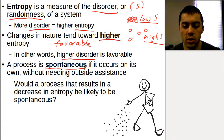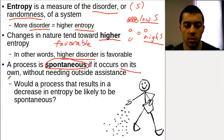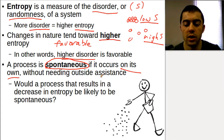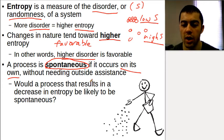An important vocabulary term here is the concept of spontaneity. A process is spontaneous if it occurs on its own — on its own without needing outside assistance. If we need to put energy in to kick-start a reaction, that's not going to be a spontaneous process. A spontaneous process doesn't require outside assistance to get started. It just wants to go on its own — it's favorable to occur.